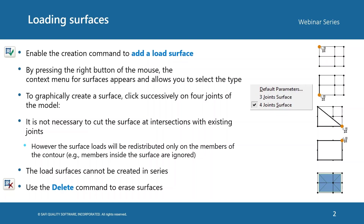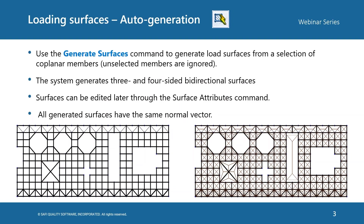We can delete the loading surface using the Delete command on the Addition toolbar. The user can also auto-generate loading surfaces using the Generate Surfaces command on the Addition toolbar. Before activating this command, the user needs to select co-planar members and then click on Generate Surface to generate the surfaces. In this case, all generated surfaces will have the same normal vector.